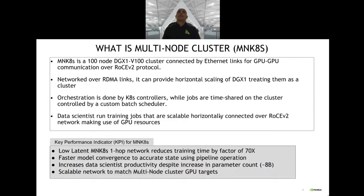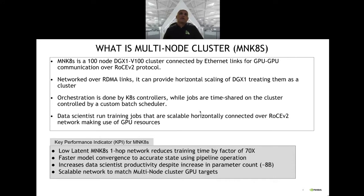MNK8S is a 100-node DGX1 V100 cluster connected by Ethernet links for GPU-to-GPU communication using the RoCE v2 protocol. We use RDMA extensively to move data. The cluster is set up to provide horizontal scaling for DGX nodes in the data center, subject to rack space, power, cooling, and heating constraints. Orchestration is done by the K8S controller, and jobs are time-shared, controlled by a custom batch scheduler for GPU fairness. Data scientists run ML jobs such as PyTorch or TensorFlow inside containers launched by K8S on worker nodes.